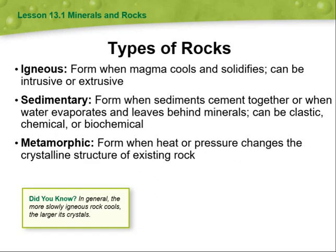Moving to the types of rocks, we have three types. Igneous rocks form when magma cools and solidifies, and can be intrusive or extrusive. Sedimentary rocks form when sediments cement together or when water evaporates and leaves behind minerals — those minerals can be clastic, chemical, or biochemical. Metamorphic rocks form when heat or pressure changes the crystalline structure of pre-existing rocks. In general, the more slowly igneous rock cools, the larger its crystals.